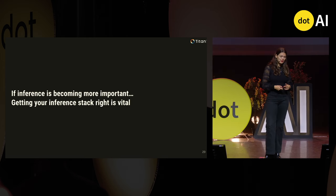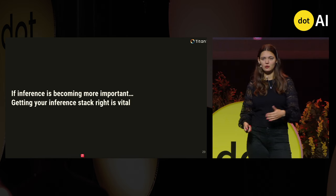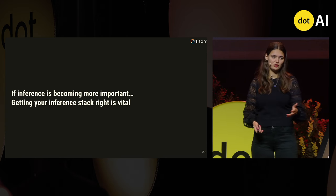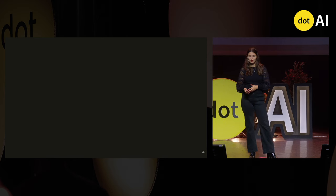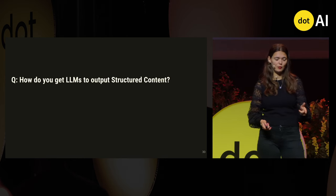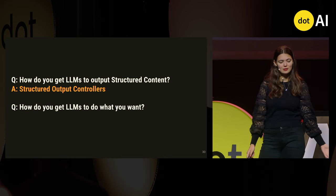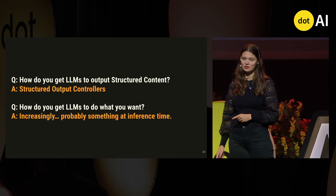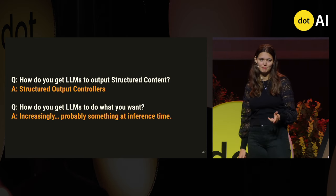If inference is becoming more and more important, getting your inference stack right is really vital. When building your inference stack — especially if you're self-hosting models — think about how to enable things like structured generation and minimize latency overheads so you can use inference time to make the model behave the way you want. If the question is how to get LLMs to output structured content, it's a pretty settled answer: use structured output controllers. But if the question is how to get LLMs to do what you want, increasingly the answer is to do something at inference time to enforce the behaviors you care about. Thank you for listening.